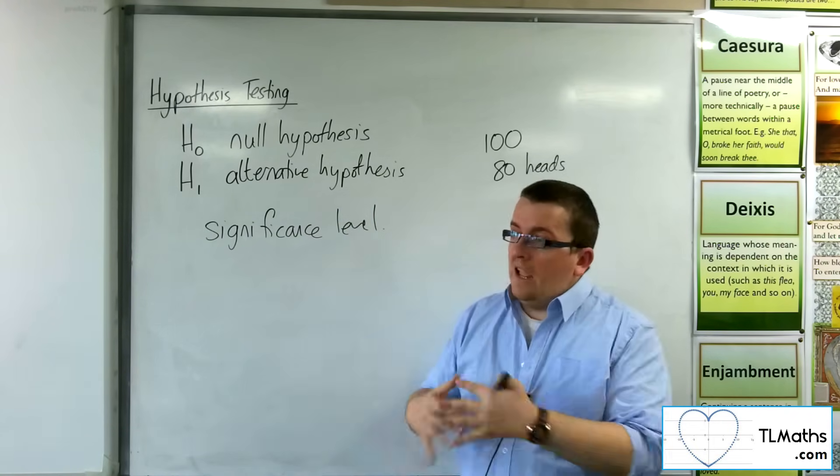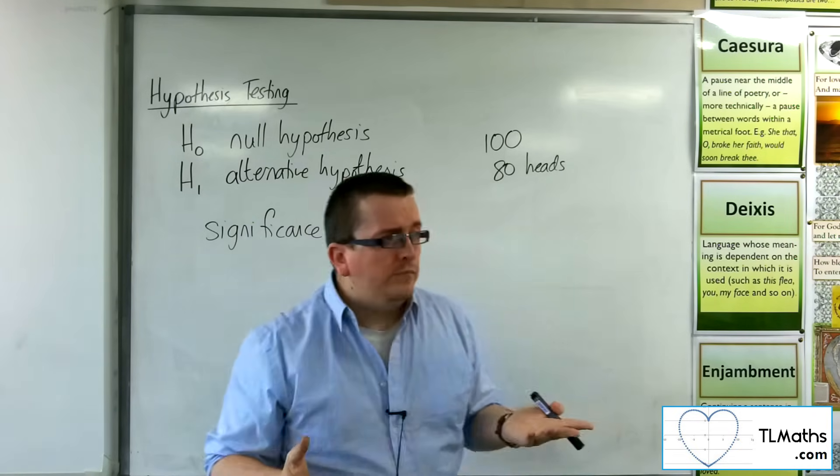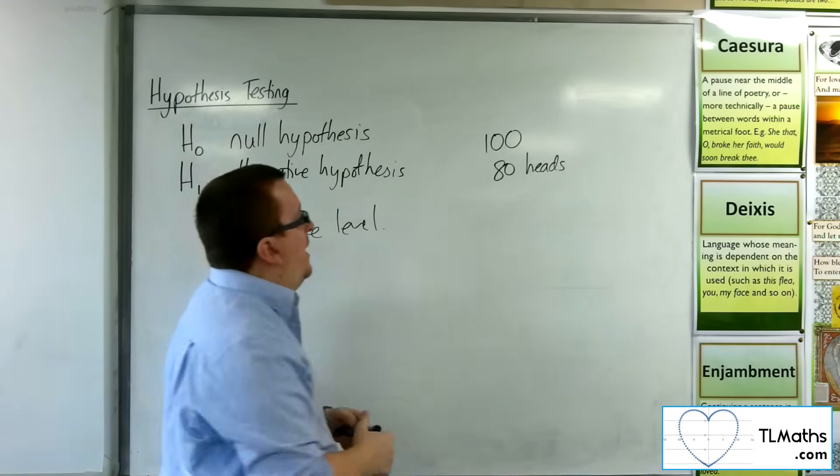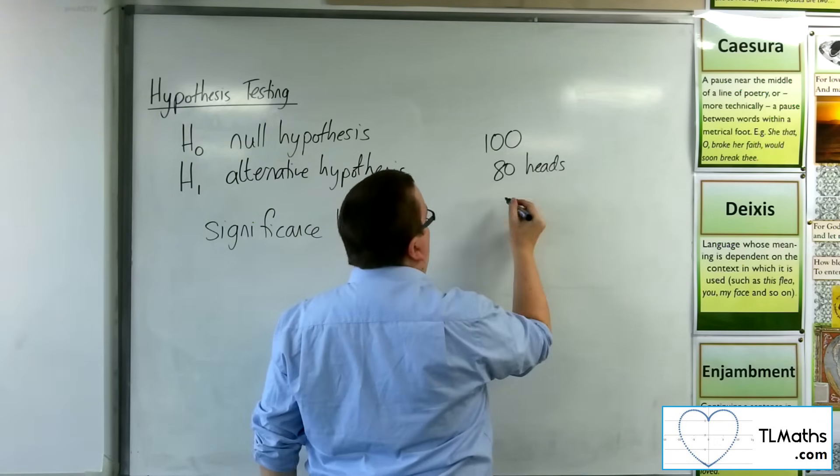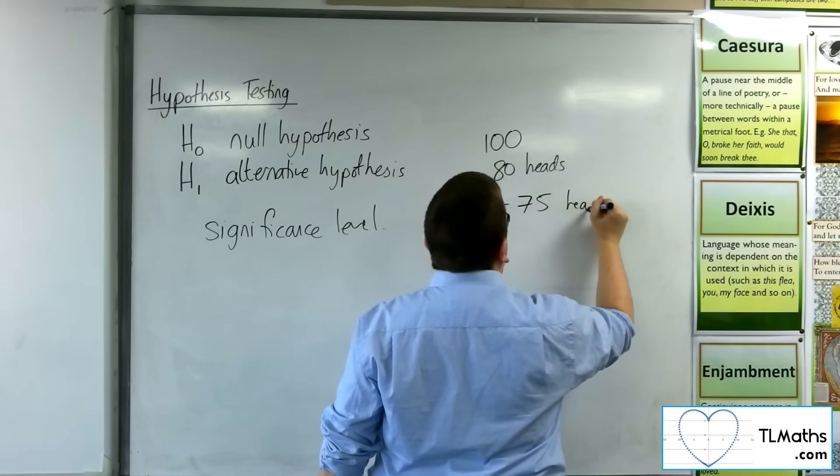Now, it will seem, hypothesis testing will seem very woolly. Because, even if, let's say, I'd set my barrier at my significance level at being at 75 heads. So, beyond 75 heads, I will say that the coin is biased.